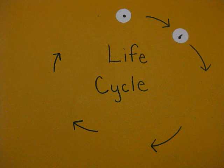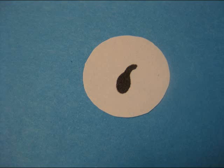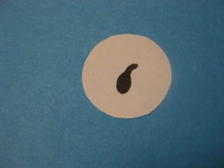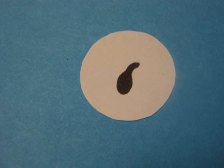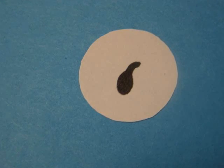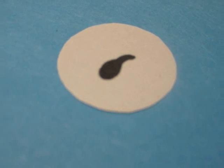The second stage is the embryo that is in the egg. The single cell from the first stage splits many times to form the embryo. During this stage, organs and gills begin to form.